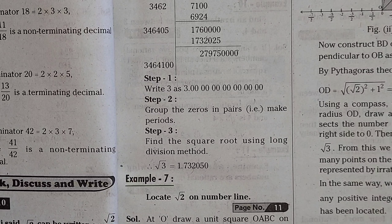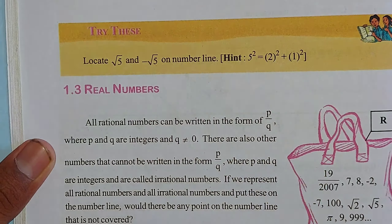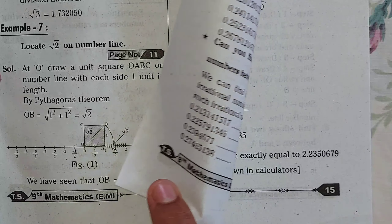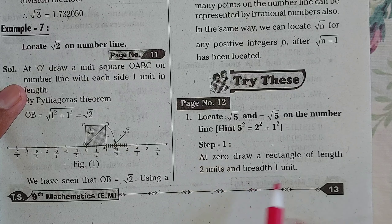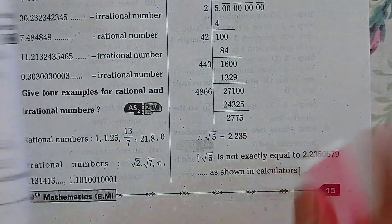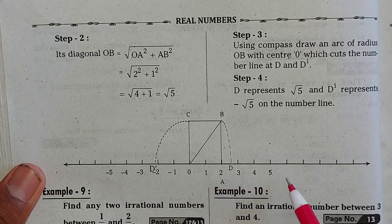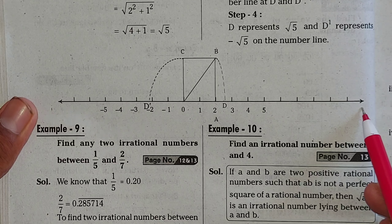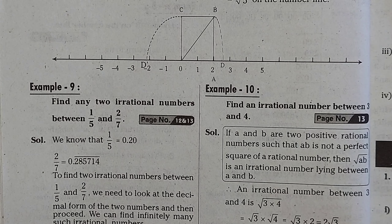On page number twelve, there is one more Try This. You can see the question and the answer is continuously moving to the next page also. In this page we have step one answer, and turning the page we have step two, step three, step four answers, one diagram, and the ending of that answer.